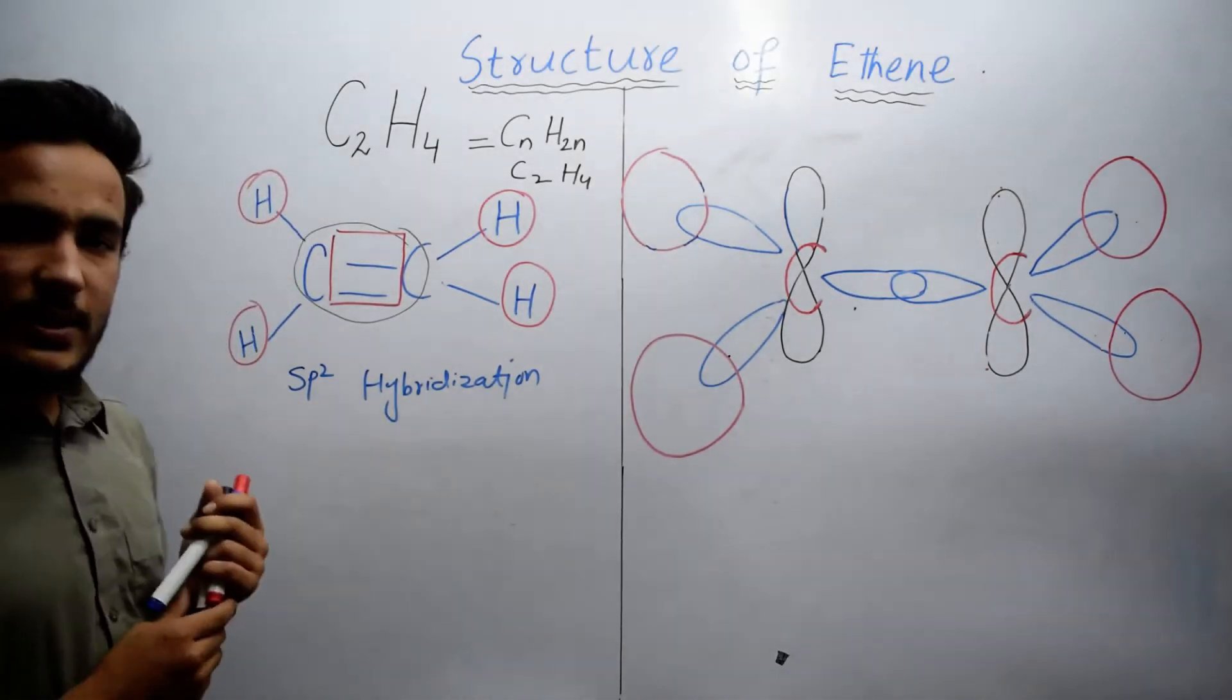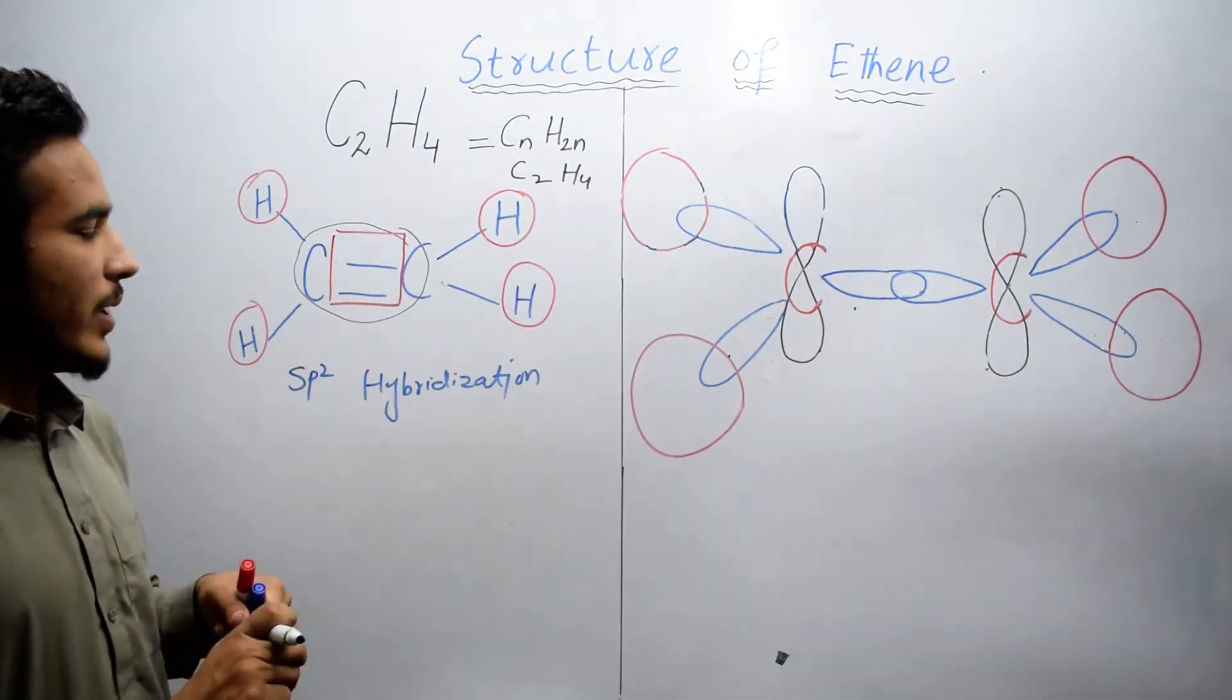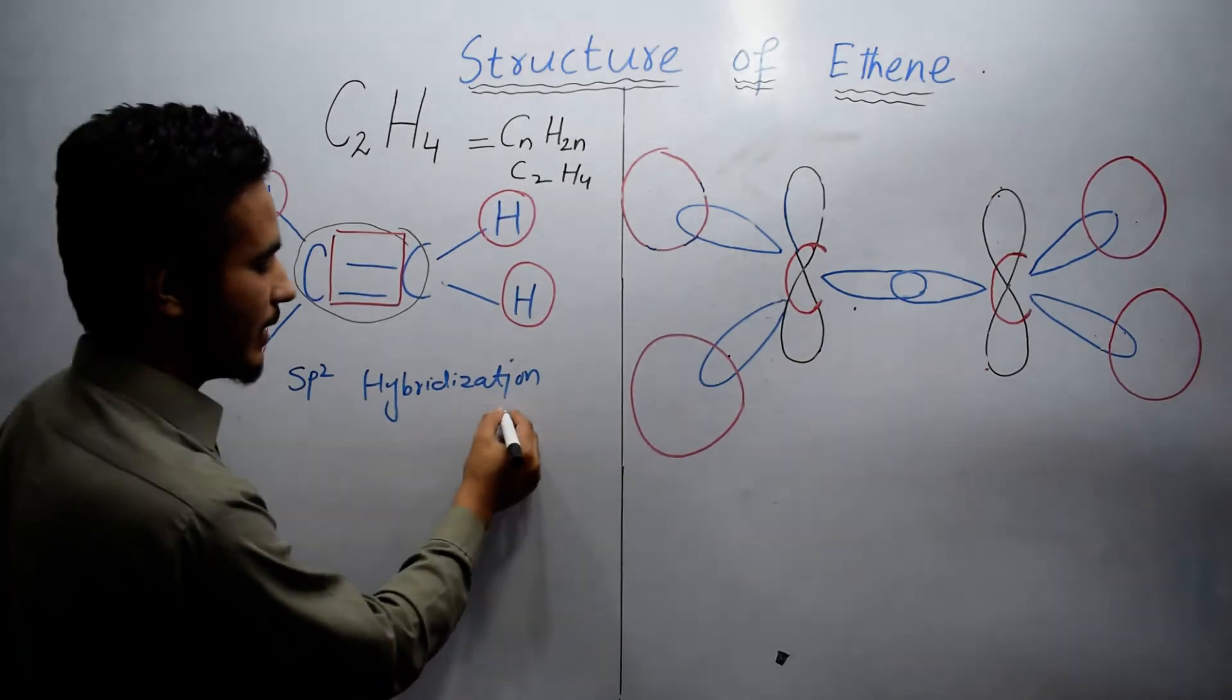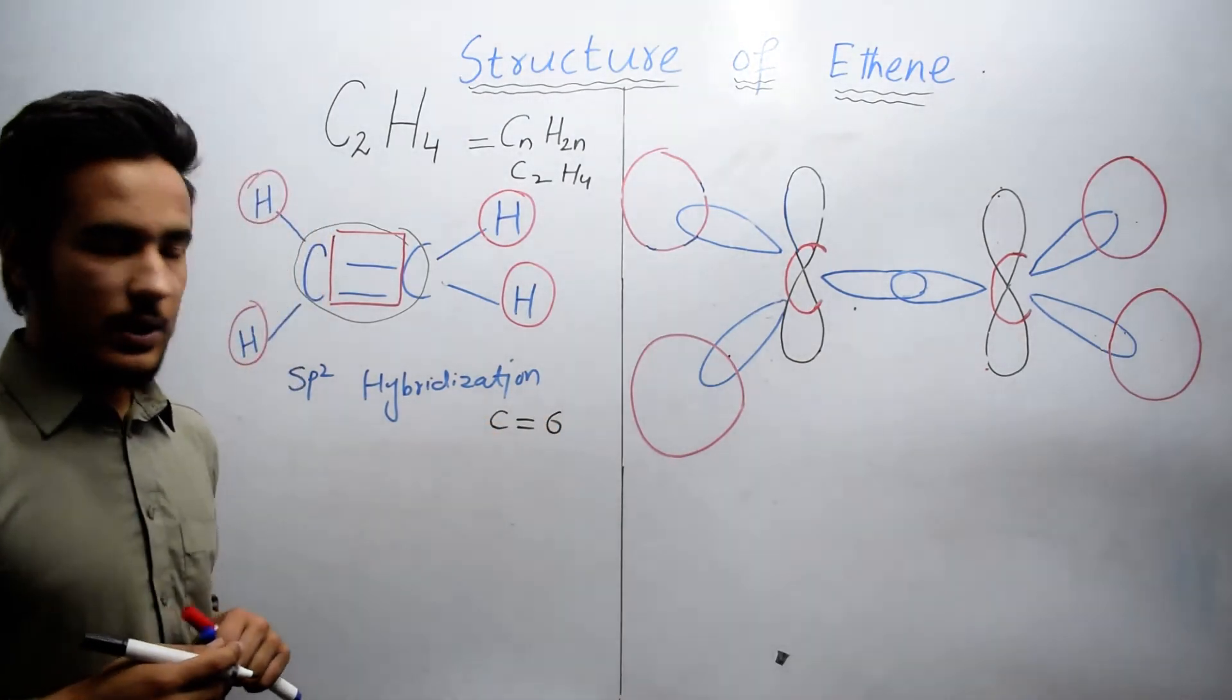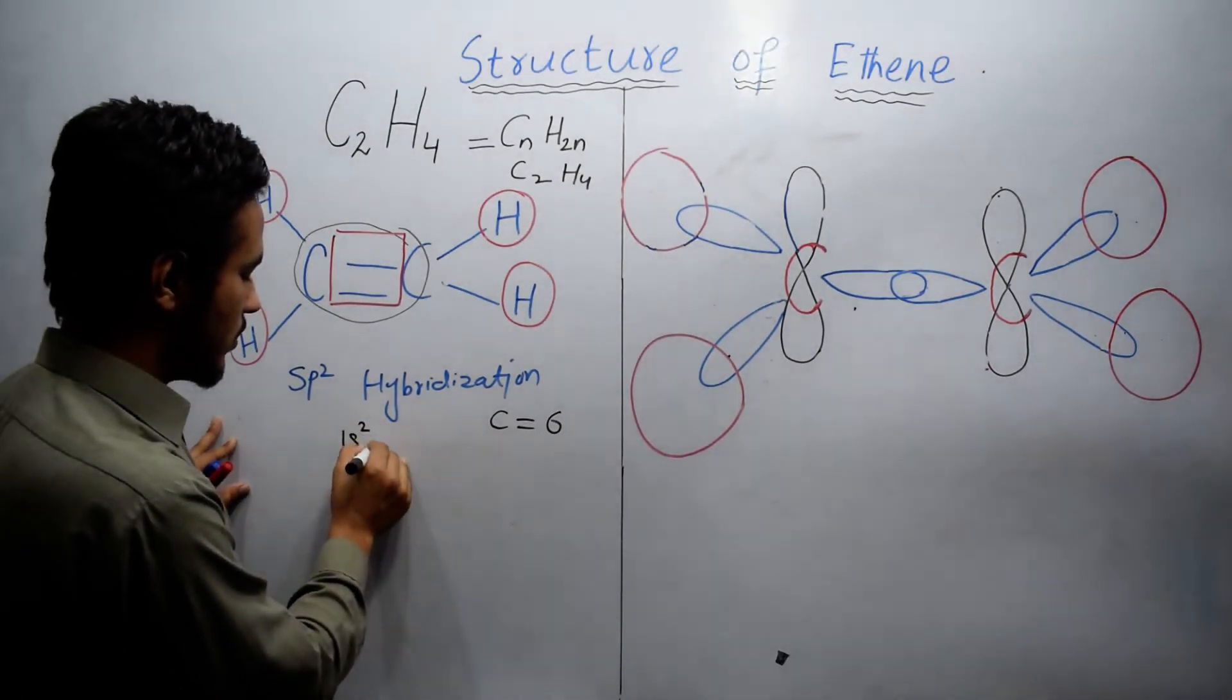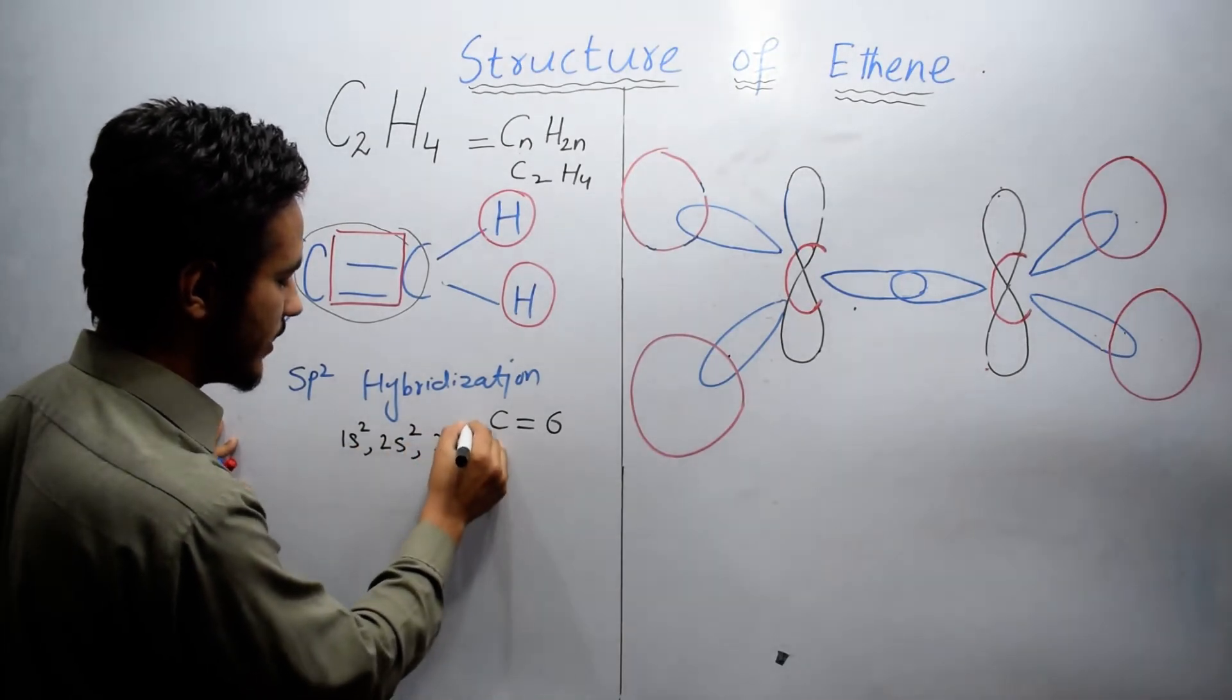Now what is basically sp2 hybridization? For this purpose we have to make the electronic configuration of carbon atom. We know that carbon has atomic number 6. So its electronic configuration is 1s2, 2s2, 2p2.